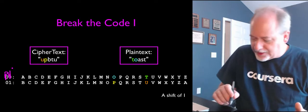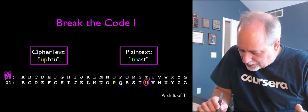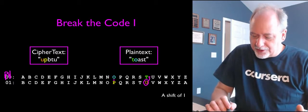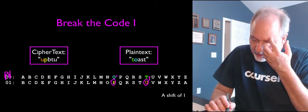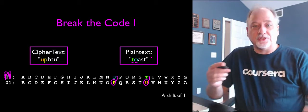This should be PP. That's the plain text. So I'll start with U. If it's 1, then I go up and it's T. And then the second one is P. So I go up and it's O, T, O. Keep going. It says toast.